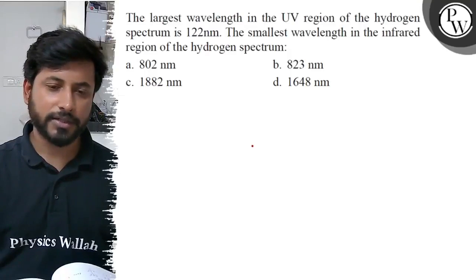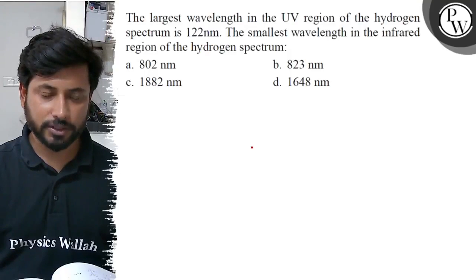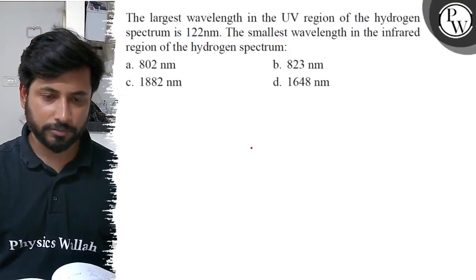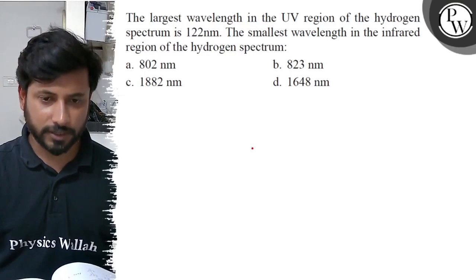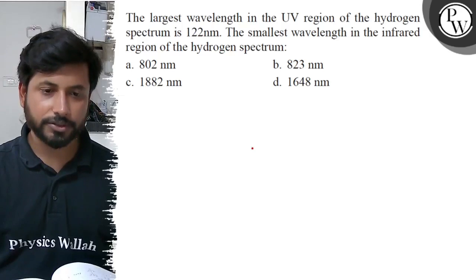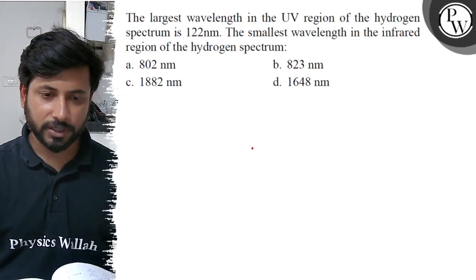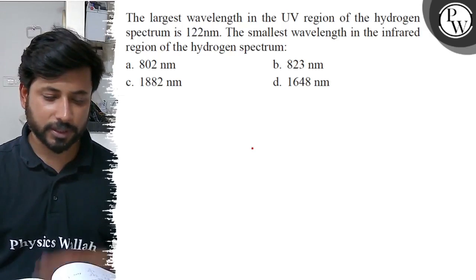Hello, let us see this question. The largest wavelength in the UV region of the hydrogen spectrum is 122 nanometer. The smallest wavelength in the infrared region of the hydrogen spectrum is: option A, 802 nanometer; option B, 823 nanometer; option C, 1882 nanometer; option D, 1648 nanometer.